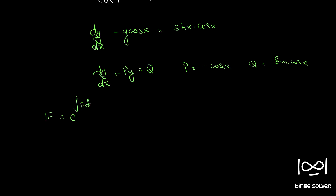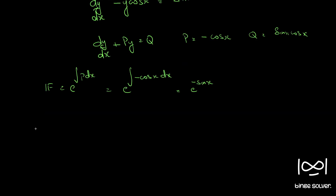The integrating factor for such a question is given by e raised to the integral of P dx, so e raised to the integral of minus cos(x) dx. The integral of cos(x) is sin(x), so we have e raised to minus sin(x). Therefore our integrating factor is e raised to minus sin(x).